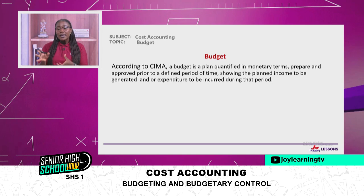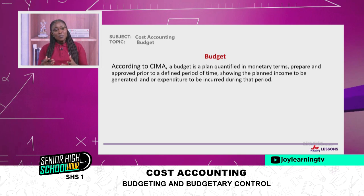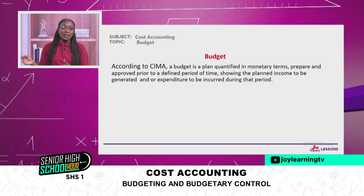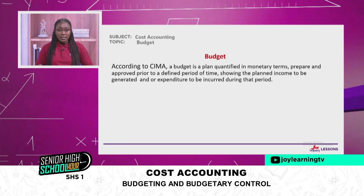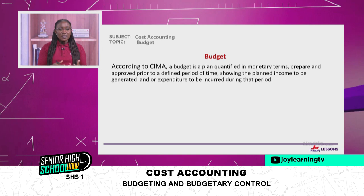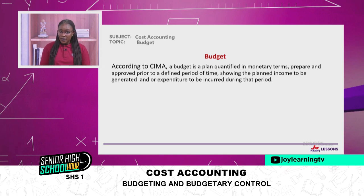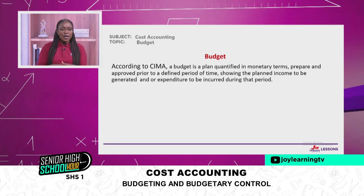A budget has been quantified in monetary terms and it is for a specified period. You can make a budget for a day, a week, a month, a year, or even five years down the line. It has to show your planned income — where you are going to generate your income from. With our government, they generate their income from taxpayers and some fees they charge from firms. After knowing your income, you also have to know the expenditure you are going to incur within that period.